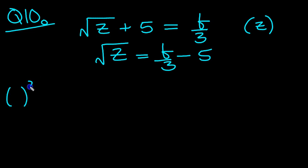To undo a square root, you square. So let's square both sides then. The square of this side would just be z.